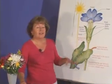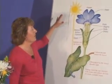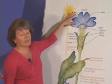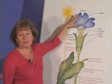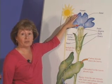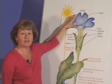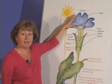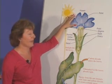Hi, I'm Dr. Bridget Behe. Welcome to Flowers in the Classroom. Today we're going to learn about the different parts of a flower. Let's start at the top of this diagram with the colorful petals. The purpose of the petals is to attract the insect or animal pollinators to the flower.